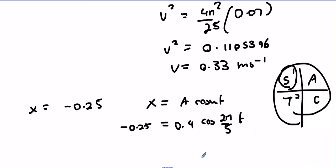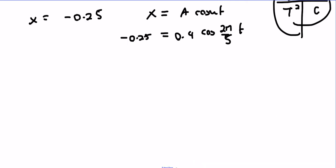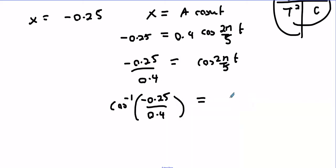First things, we're going to get cos(2π/5 t) equals minus 0.25 over 0.4. We're going to do cos inverse of minus 0.25 over 0.4, and that should equal the angle 2π over t.